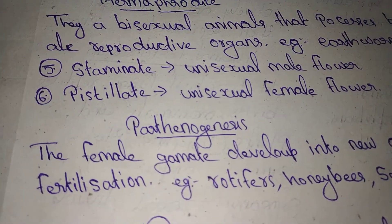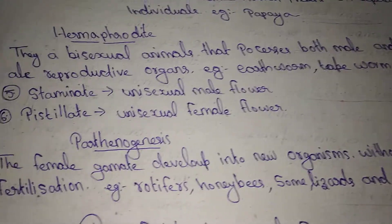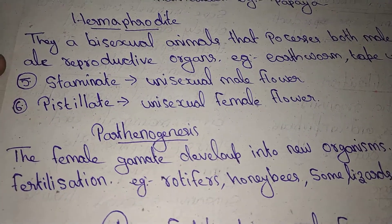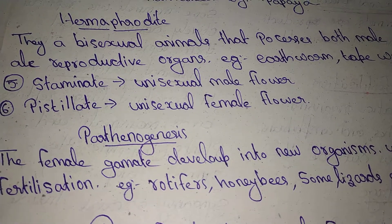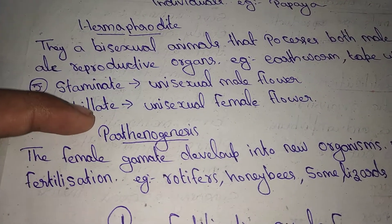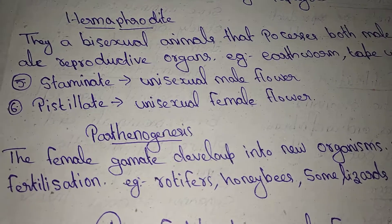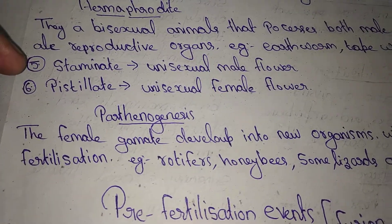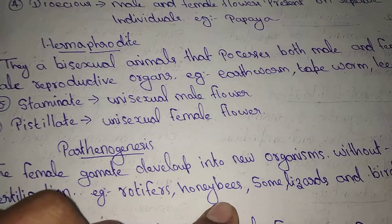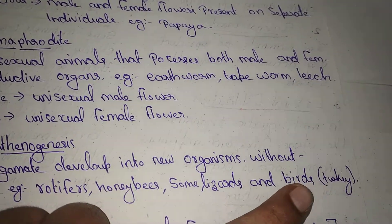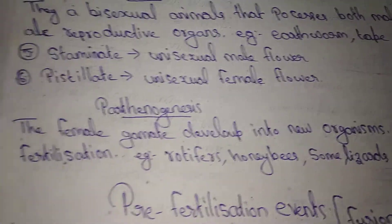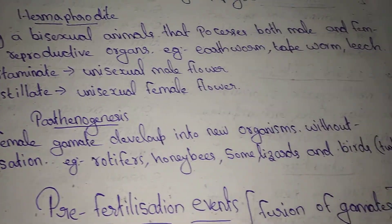Parthenogenesis — the female gamete develops into a new organism without fertilization. Examples include honeybees, lizards, and birds like turkey.